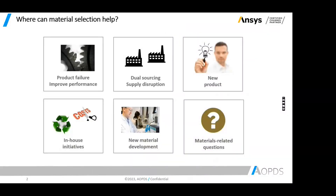There are different parts throughout the entire product development process where material selection can help. If you have a failure in your design, one area you can potentially improve is changing your material — for example, switching to a stiffer material. Sometimes cost is high, and changing the material can help a lot with reducing cost per unit volume.